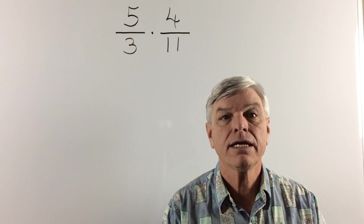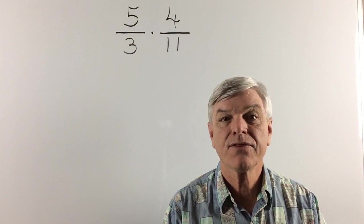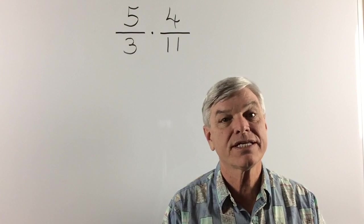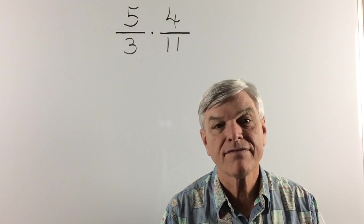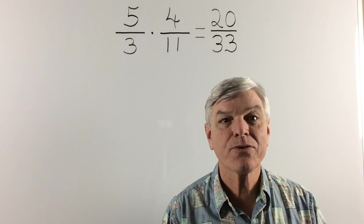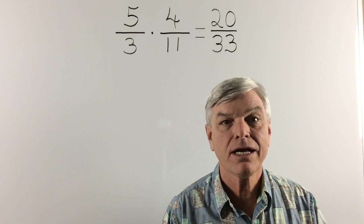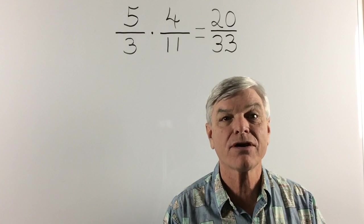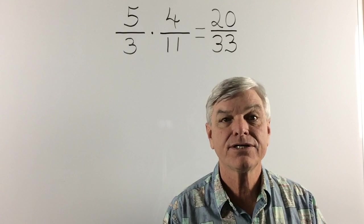Now let's look at the 4 again. Can the 11 be reduced by 4? No. Can the 3 be reduced by 4? No. So our fractions have been reduced to the simplest possible terms. We are ready to multiply. 5 times 4 is 20. And 3 times 11 is 33. And if we properly reduced our fractions before we started, we will not have to reduce our answer. And we have properly reduced our fractions. And 20 over 33 is in the simplest terms.